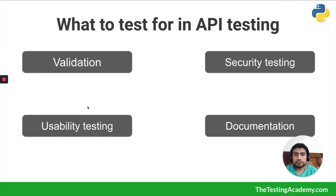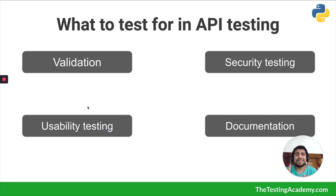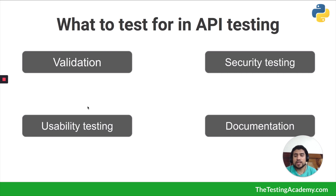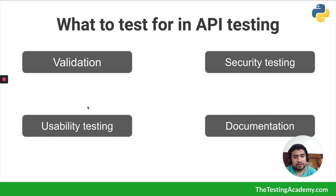In API testing we perform validation, security testing, usability testing, and documentation testing. Validation is about verifying keys and different HTTP methods. Security testing covers whether APIs are properly authenticated and authorized. Usability testing checks behavior when wrong or malformed data is sent. Documentation testing checks how APIs are properly documented.